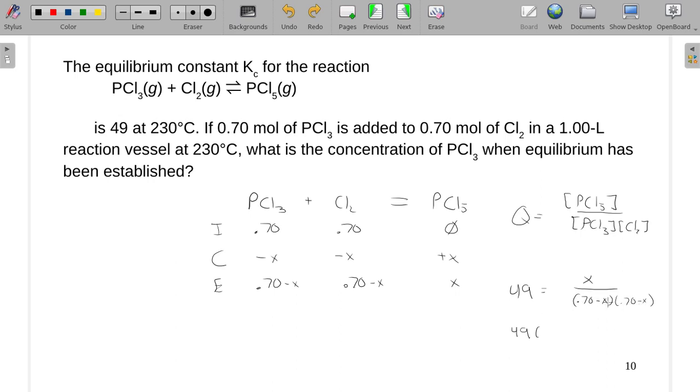So 0.7 times 0.7 is 0.49. And then we're going to have minus 0.7X minus 0.7X. So minus 1.4X. And then positive X squared. And then this would be equal to just X. And now I'm going to work this 49 in.